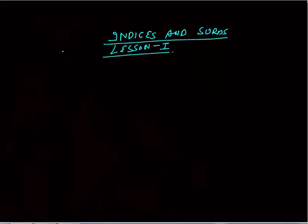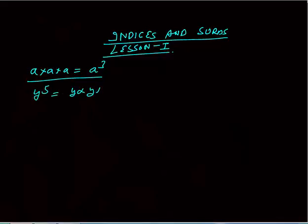Now let's start with the basics. If I write A into A into A three times, it will become A cube. Similarly, Y power 5 means I can always write Y into Y into Y five times — that is the meaning of the basics.